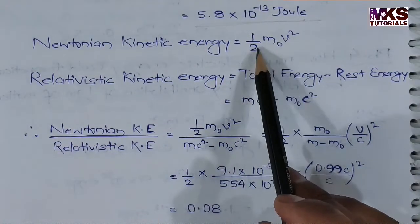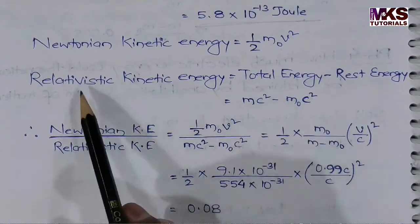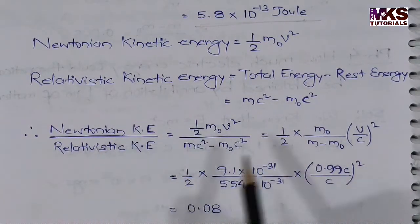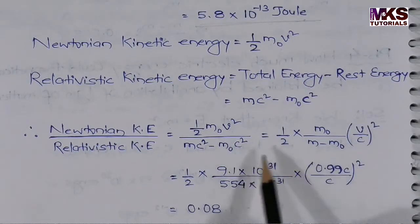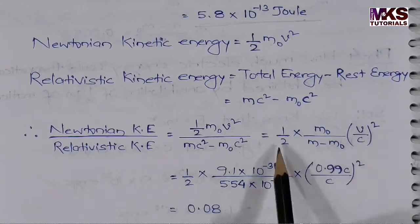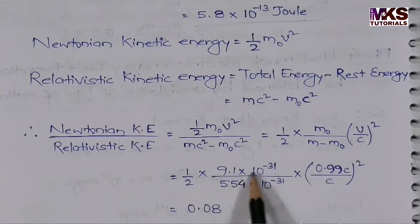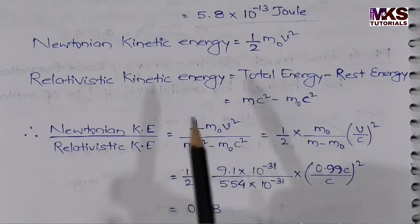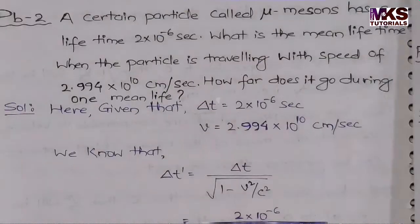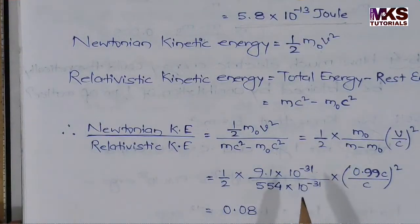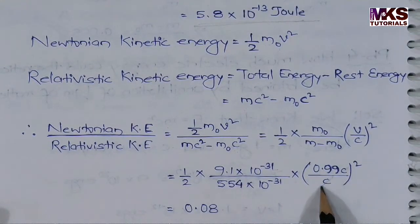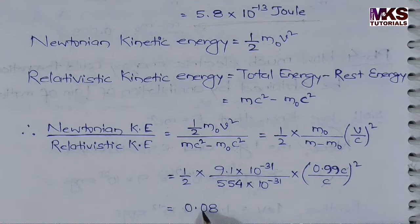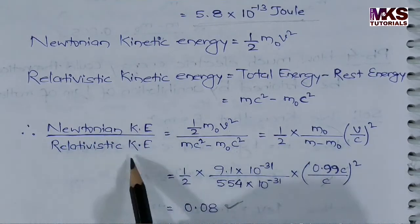I will substitute the values into the ratio. In the numerator we have ½m₀v², and in the denominator we have mc² minus m₀c². Substituting v = 0.99c, the c terms cancel out. When you solve it, you get 0.08. So the ratio of Newtonian kinetic energy to relativistic kinetic energy is 0.08.